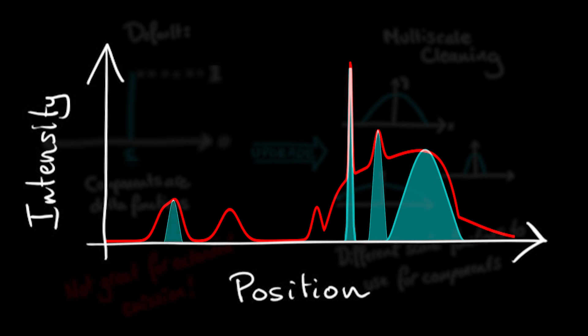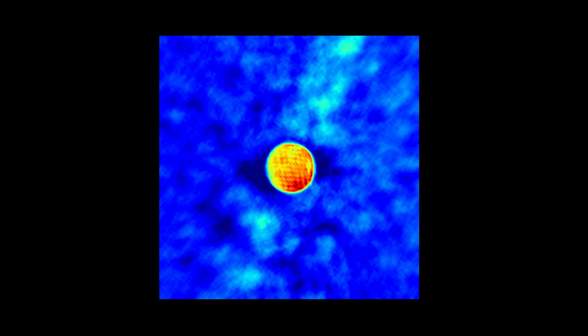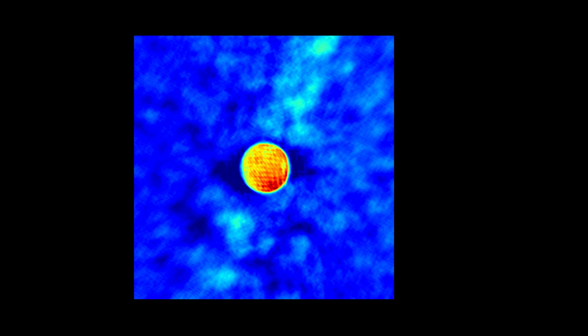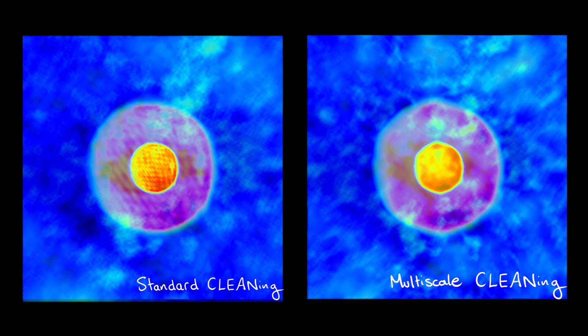This approach allows CLEAN to better model extended emission. Here we see a high resolution band 6 image of Jupiter's moon Europa, cleaned in the standard way with simple delta functions. Here's the same image but cleaned using a multi-scale approach, with a combination of delta functions and various widths of components.